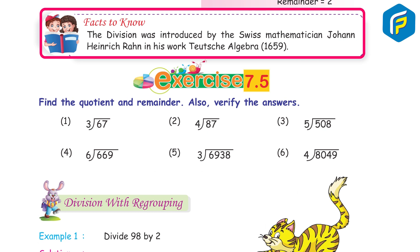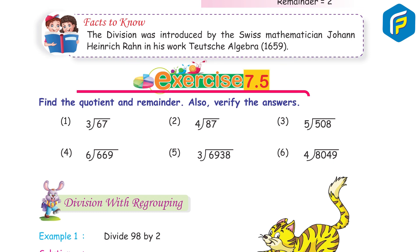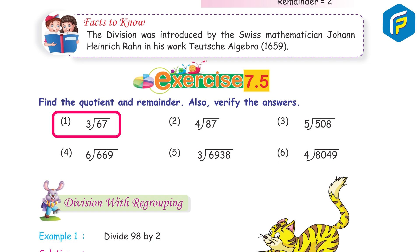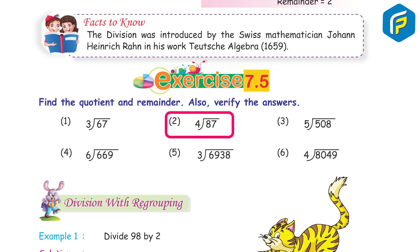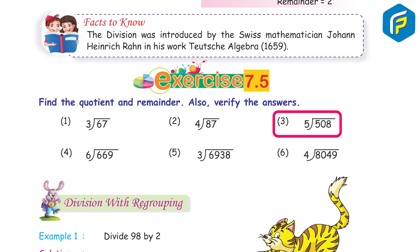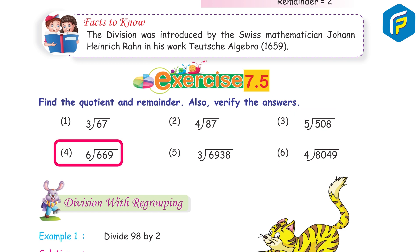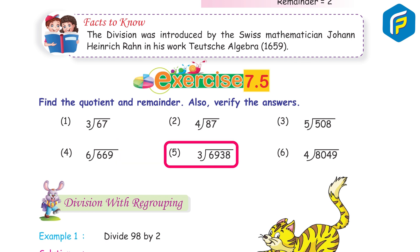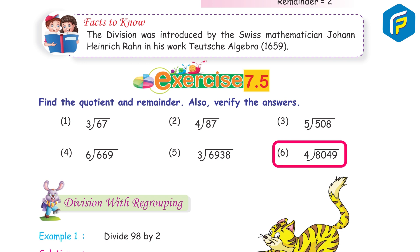Did you know? Division was introduced by the Swiss mathematician John Heinrich Rahn in his work Teutsche Algebra in 1659. Exercise 7.5: Find the quotient and remainder. Also verify the answer. 1) 67 ÷ 3: quotient 22, remainder 1. 2) 87 ÷ 4: quotient 21, remainder 3. 3) 508 ÷ 5: quotient 101, remainder 3. 4) 669 ÷ 6: quotient 111, remainder 3. 5) 6938 ÷ 3: quotient 2312, remainder 2. 6) 8049 ÷ 4: quotient 2012, remainder 1.